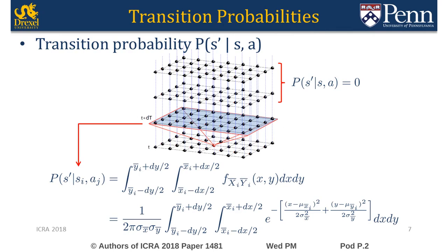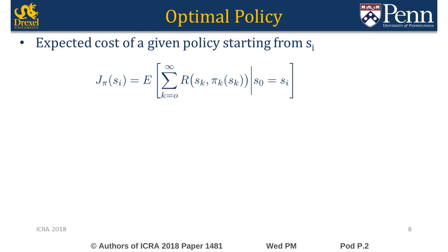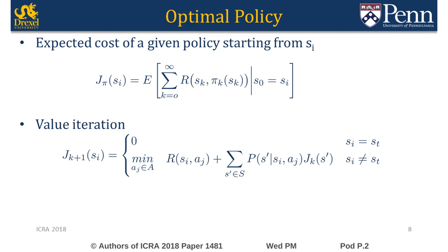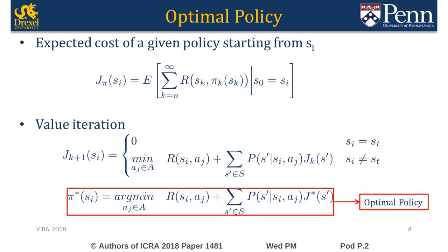For a state in the immediately next time slice, the transition probability is computed using the probability density function of the coordinates of the flow-driven intermediate points. Each policy has an associated expected cost. The optimal cost vector satisfies a dynamic programming relation and can be computed using value iteration. At each state, the optimal policy is to select the action that minimizes the cost vector.